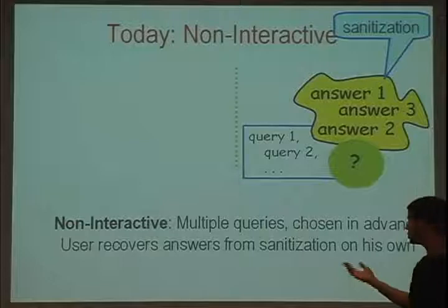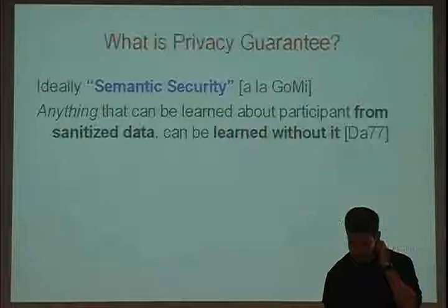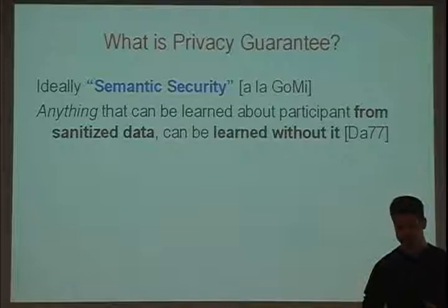When a user wants to compute an answer to any one of the queries, he can just go to the blob on his own and compute the answer. That's the non-interactive model I'll be considering today. If you think of publishing a study, this is usually what happens — you have your set of questions, you publish the answer, and hopefully you delete the database you used.